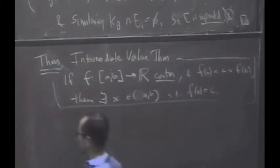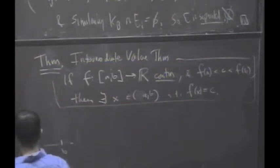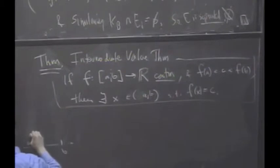And everybody's favorite picture of the Intermediate Value Theorem is something like this. A, B, I'll draw it this way. A, B, and continuous function.